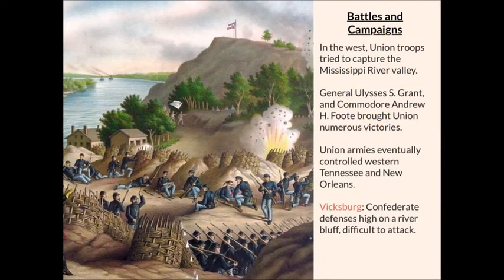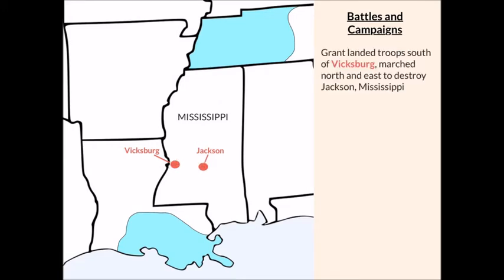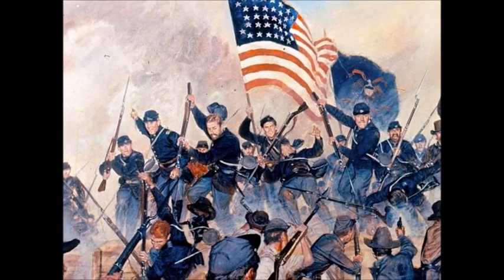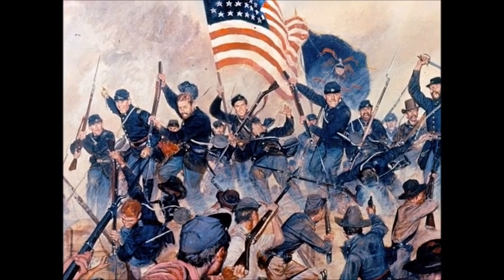After several failures, Grant decided to approach from the east. After landing troops south of Vicksburg, Grant marched north and east to destroy Jackson, Mississippi. He then turned west, clashed with the Vicksburg garrison, and completely surrounded the city.